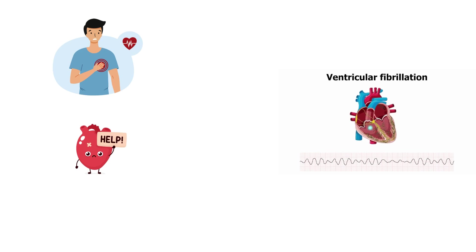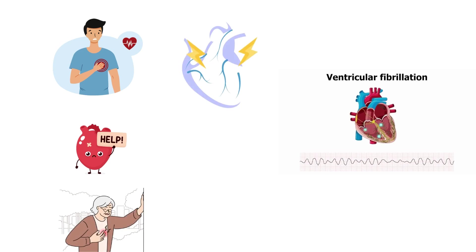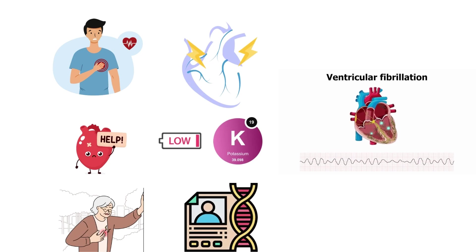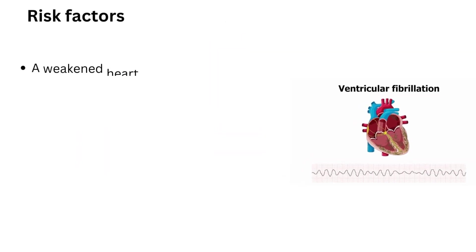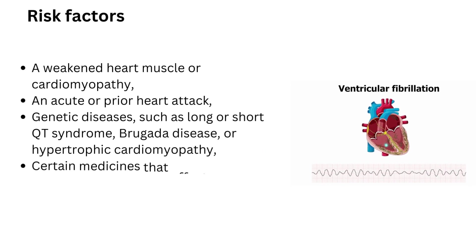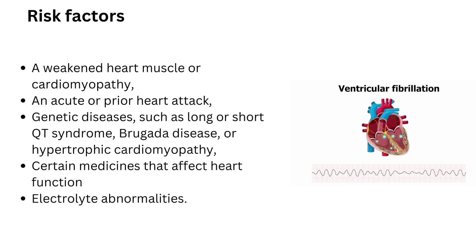A heart that has been damaged by a heart attack or other heart muscle damage is vulnerable to V-Fib. Other causes include heart failure, heart valve disease, a low potassium level or other electrolyte abnormalities, certain medicines, and certain genetic diseases that affect the heart's ion channels or electrical conduction. The most common risk factors include a weakened heart muscle or cardiomyopathy, an acute or prior heart attack, and genetic diseases such as long or short QT syndrome, Brugada disease, or hypertrophic cardiomyopathy.